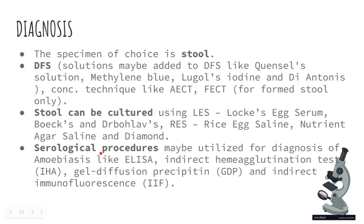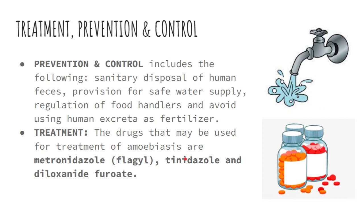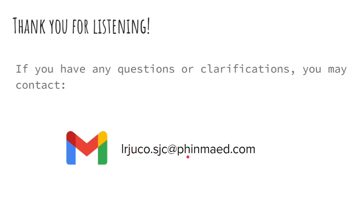For treatment, prevention, and control: prevention includes sanitary disposal of human feces, provision of a safe water supply, regulation of food handlers, and avoiding the use of human excreta as fertilizer. For treatment of amoebiasis, the drugs used include metronidazole or Flagyl, tinidazole, and diloxanide furoate. Thank you for listening — if you have any questions or clarifications, you may contact me through this email.